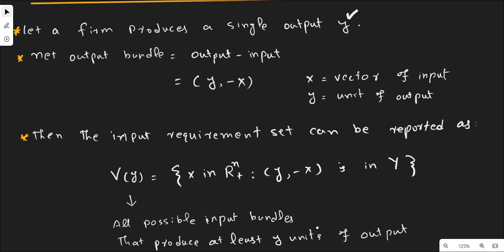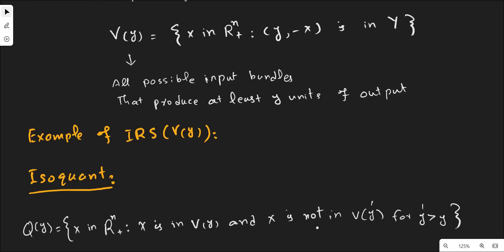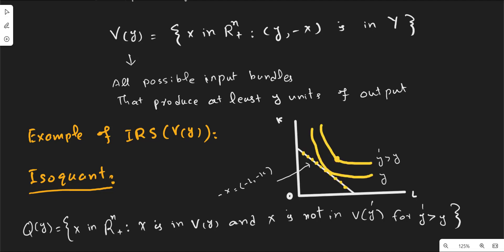The input requirement set can be explained with the following example. The first example is that the input requirement set is the isoquant. As we know, the isoquant shows the various combinations of two factor inputs such as labor and capital, where each combination shows the same level of output, other things remaining the same. The isoquant can be presented as shown in this diagram.